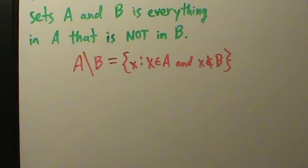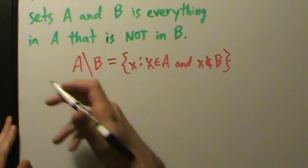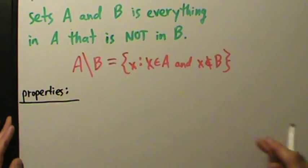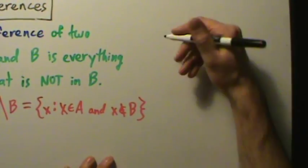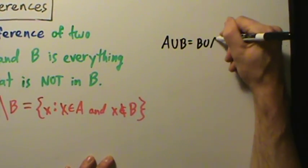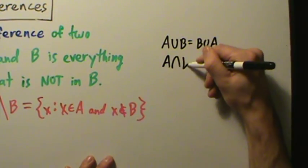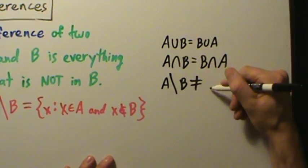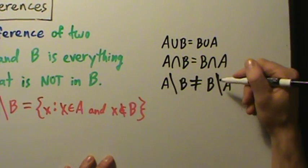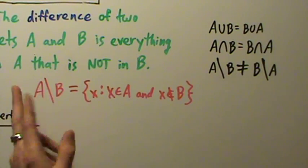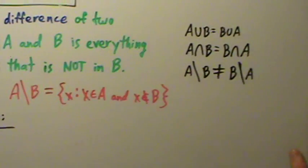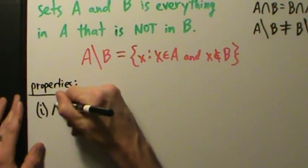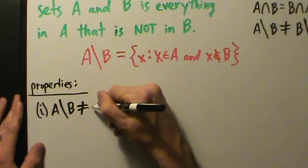Let's talk about some properties and do a quick example. Remember, when we talked about unions and intersections, A union B is the same as B union A, and A intersect B is the same as B intersect A. What's unfortunate here is A without B is not the same as B without A. So if you flip the sets around, you're going to get something different in general — these are not equal.